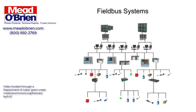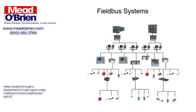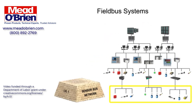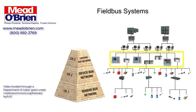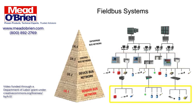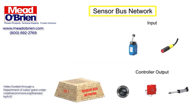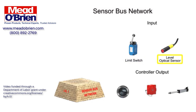Field bus industrial networks can be broken down into four levels, each with increasing levels of complexity. The most basic level is the sensor bus network. Sensor bus networks are the least complex of networks developed for industrial application. In these networks,